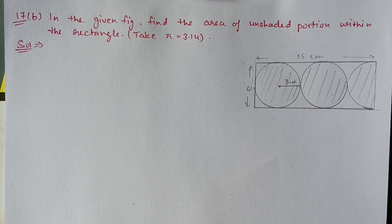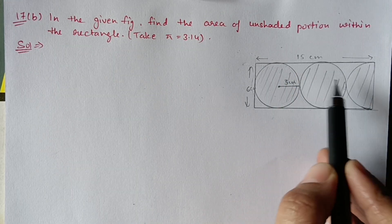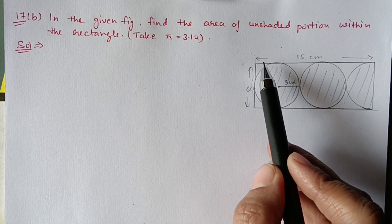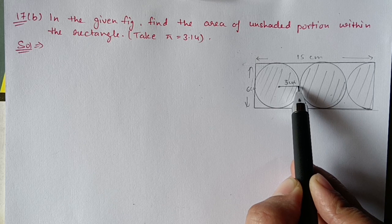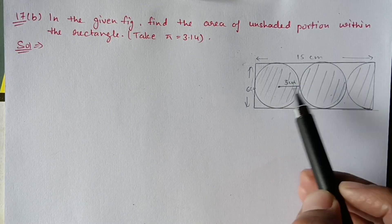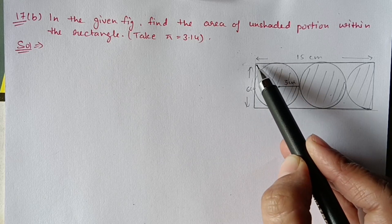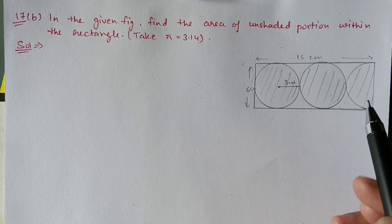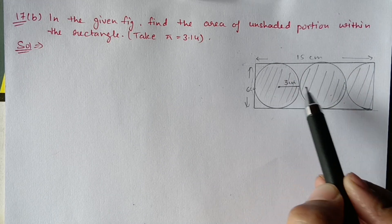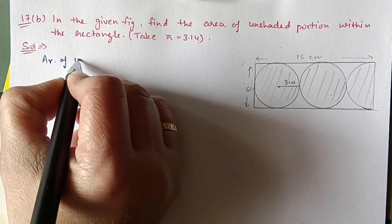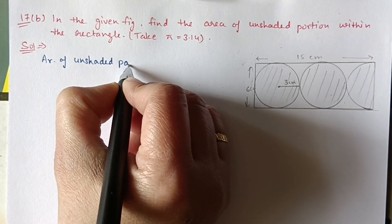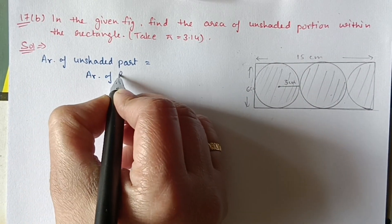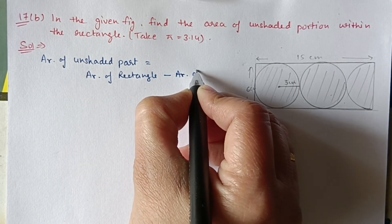Next, Question 17 part b. In the given figure find the area of the unshaded portion within the rectangle. Take π = 3.14. The figure has two and a half circles shaded inside a rectangle. The rectangle length is 5 × 3 = 15 centimeter and breadth is 3 + 3 = 6 centimeter. Area of unshaded part = area of rectangle minus area of two and a half circles.